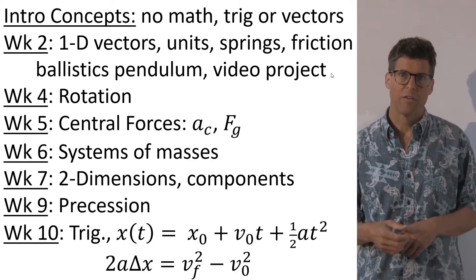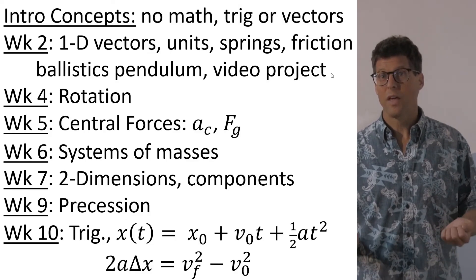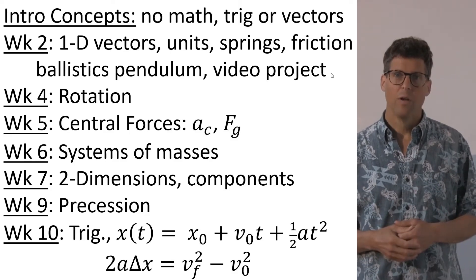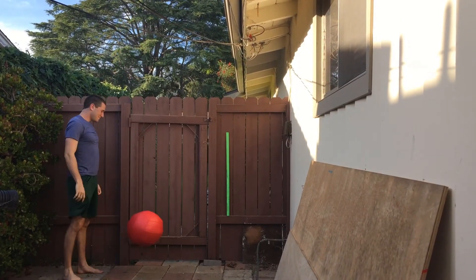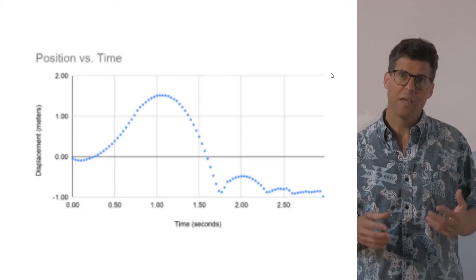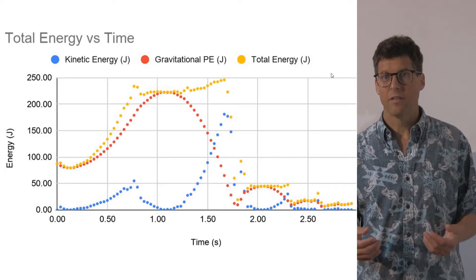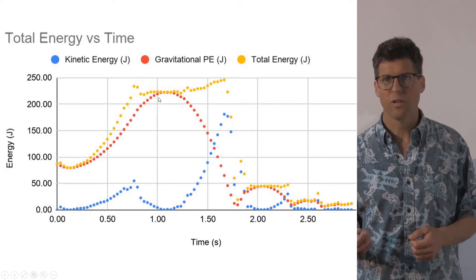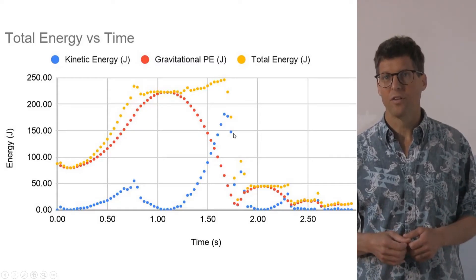And we have them do a video project. The students take a video of themselves doing something strenuous so they can use the video to get the kinematics and calculate the power. So for instance, we want to throw a heavy ball into the air. Software can extract the position versus time data, and from this we can calculate the velocity and the acceleration. From the velocity, we can calculate the kinetic energy, and from the position, we can calculate the potential energy. We can add these two together to get the total mechanical energy of the system.